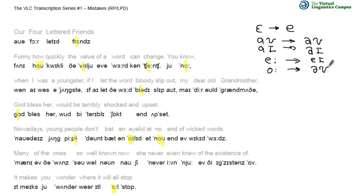We don't have these two standing on their own. And last but not least, we don't have a long low-back vowel of this kind. If it is long, it should be this one — as in 'law' — but 'all', as in 'all stop'. So these are the main mistakes we can identify as far as symbols are concerned.